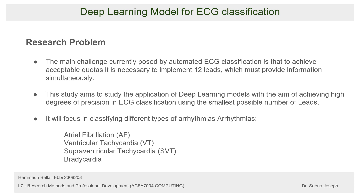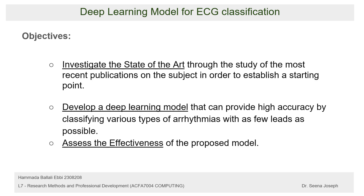There are three objectives in this research. The first is to investigate the state of the art through literature publications and understand where research currently stands in this topic, and what is still required to achieve better results. The second objective is to develop a deep learning model that provides high accuracy by classifying different types of arrhythmias with the minimal number of leads possible. The third objective is to assess the effectiveness of the model by testing and comparing it to the most recent models presented in recent years.